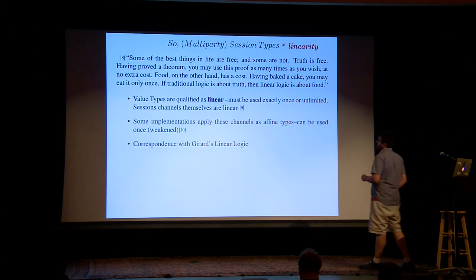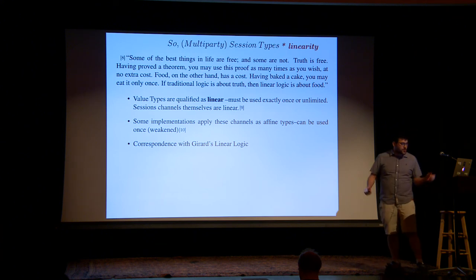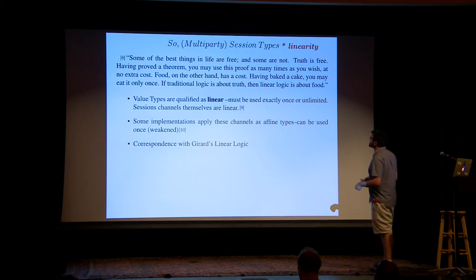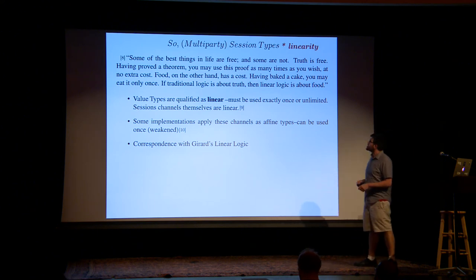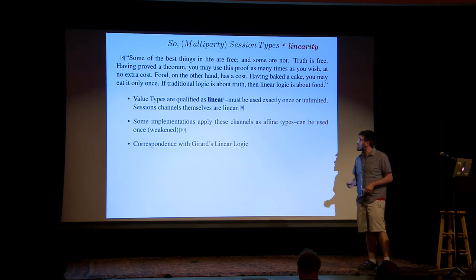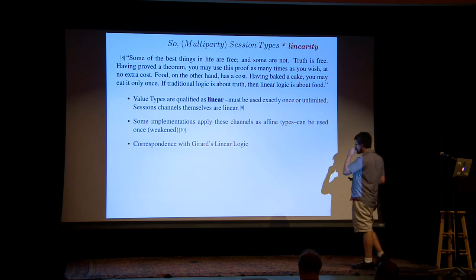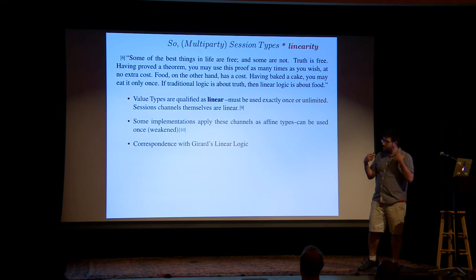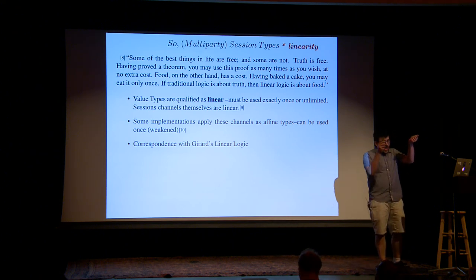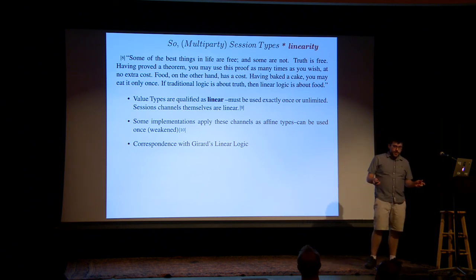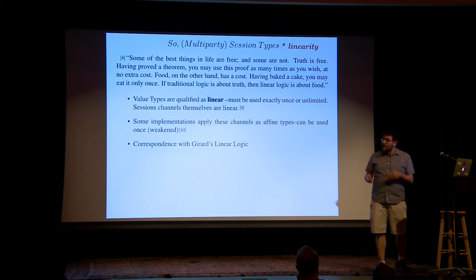Linearity is a whole topic in itself. There's great work by Girard on linear logic. Here's a great Wadler quote that defines it best: 'Some of the best things in life are free and some are not. Truth is free — having proved a theorem, you may use the proof as many times as you wish at no extra cost. Food, on the other hand, has a cost — having baked a cake, you may eat it only once. If traditional logic is about truth, then linear logic is about food.' So you can't have your cake and eat it too. With linear types, even if I start with some Boolean, that Boolean has to be the same throughout a session. There's an implementation in Rust applying affine typing, which is weaker — linear types say you must send a message exactly once; affine types say you can maybe send it once.